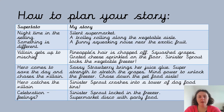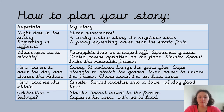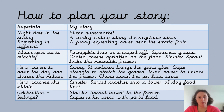This next slide looks similar to the planning sheet I've made for you. Down the side is the order of events in Supertato: it was night time in the supermarket setting, something was different, something was wrong. Then the villain — the Evil Pea — got up to mischief and caused chaos. Then the hero, Supertato, came to save the day and there was a chase. Eventually the hero caught the villain, and at the end there was a celebration where everyone was happy that the Evil Pea had been taken back to the freezer.